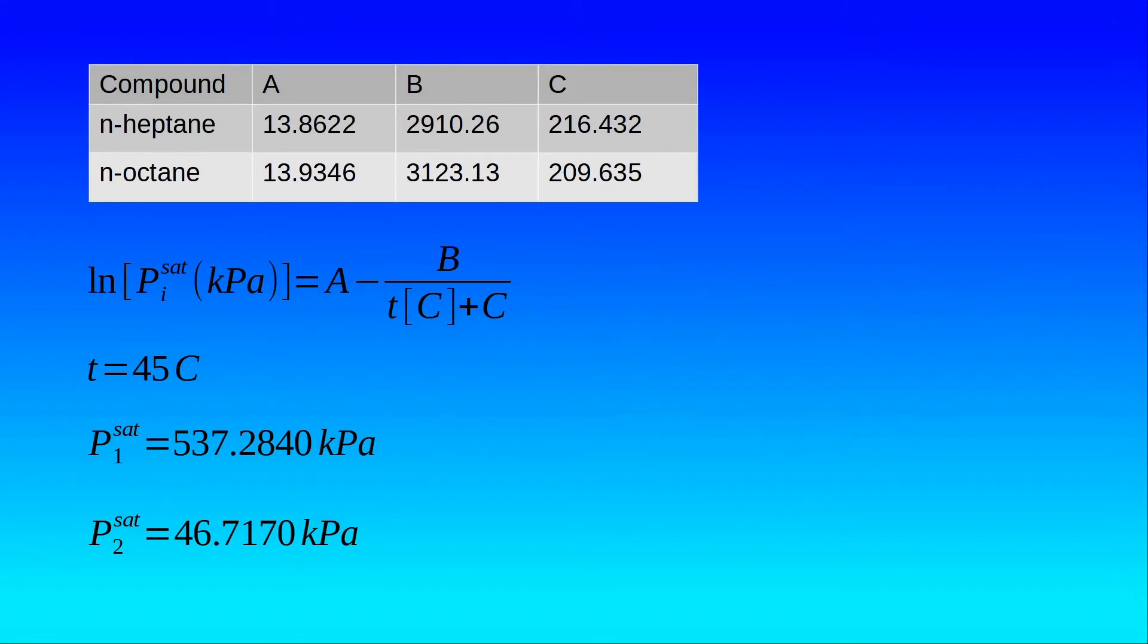I have noted the Antoine's constants for both compounds. Now using these Antoine's constants at temperature 45 degrees Celsius, the vapor pressure of n-heptane is 537.2840 and that of n-octane is 46.7170, both in kilopascals.